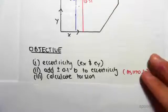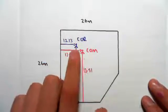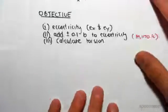For the eccentricity, we're going to come to our center of rigidity and center of mass and find the distance between them in the x and y direction. For the eccentricity in x, we're going to be taking the absolute value of the difference.